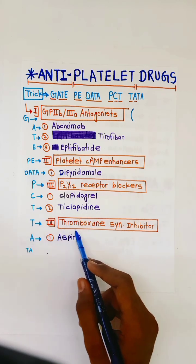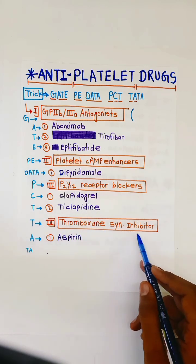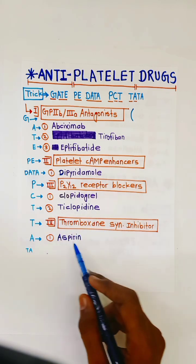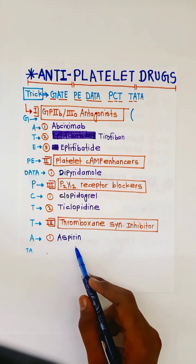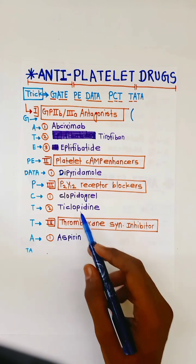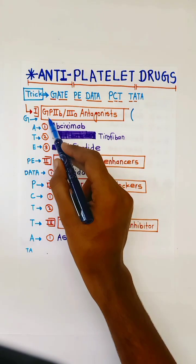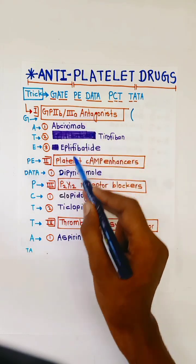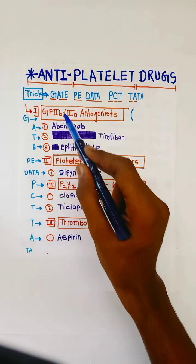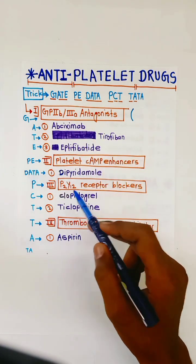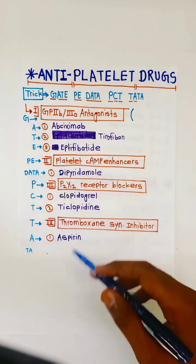T for Thromboxane synthesis inhibitors — in this only one drug, A for Aspirin. What are GP2B3A and P2Y12? These are the receptors present on the platelet cell.